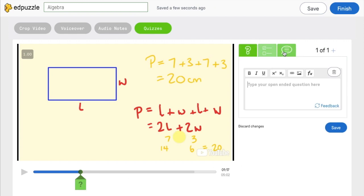Once you click it, you'll have three options. The first option is an open-ended question, and here you can allow your students to write their own answers.